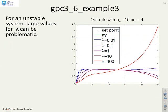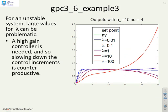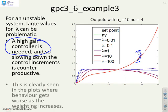What about example 3? Example 3 was this unstable system and in this particular case large values of weighting can actually be problematic. And the reason for that is if you have an unstable system you need a high gain controller, and a high gain controller means you must allow the inputs to be active and aggressive. If the purpose of increasing lambda is to reduce the input activity then it's likely to be counterproductive when it comes to controlling an unstable system. And that's what you can see here: as you increase the weighting the behaviour gets worse even though nu is 4 which should be big enough.